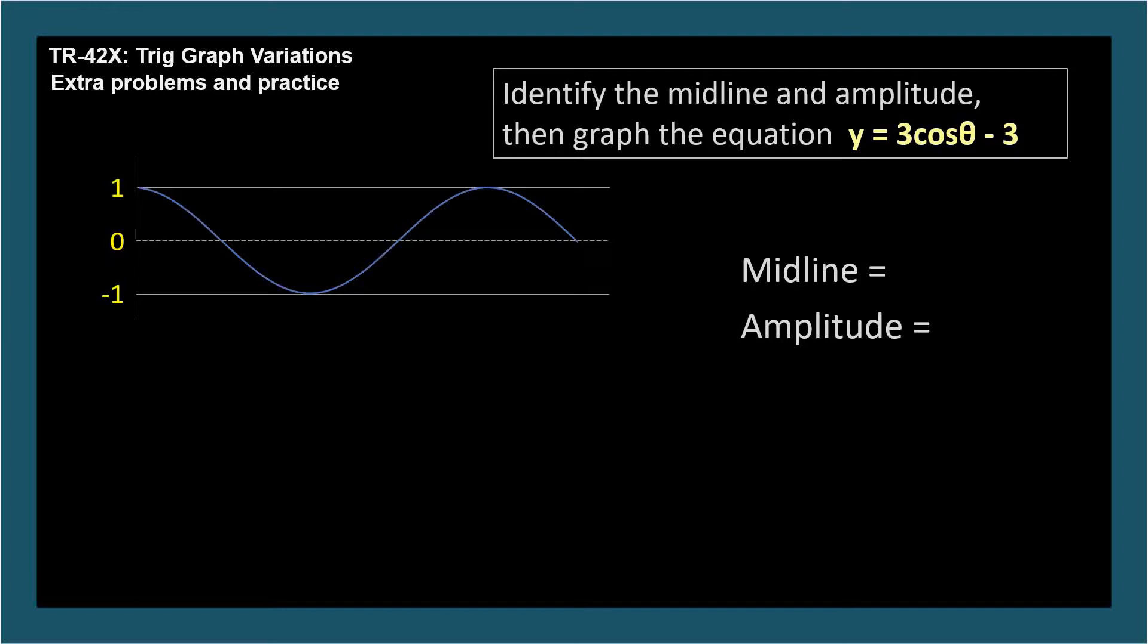The midline and amplitude can be read directly from the given equation. The midline is the vertical shift amount denoted by the term at the end, negative 3. So the midline is negative 3, or y equals negative 3. The amplitude is the absolute value of the trig function's coefficient. The absolute value of 3 is 3, so the amplitude is 3.